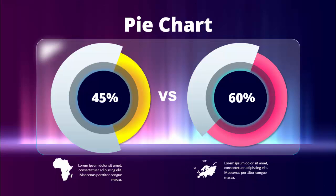In today's tutorial, I'm going to show you how to create a pie or donut chart in PowerPoint. As you can see, I'm comparing two different pie charts — 45 percent versus 60 percent. You can add some detailed text along with an icon, and I've given a gradient background which gives a glass effect.